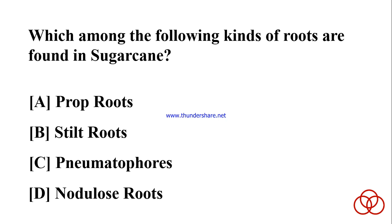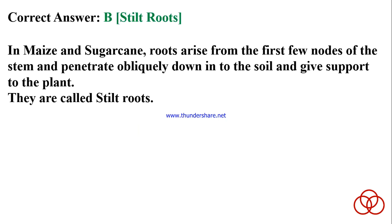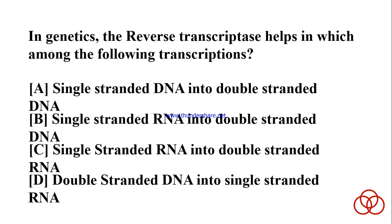Which among the following kinds of roots are found in sugarcane? A) Prop roots. B) Stilt roots. C) Pneumatophores. D) Nodulose roots. Correct answer: B. Stilt roots. In maize and sugarcane, roots arise from the first few nodes of the stem and penetrate obliquely down into the soil, giving support to the plant. They are called stilt roots.